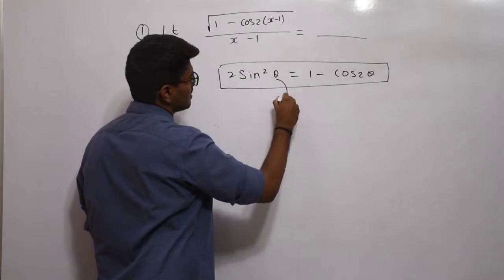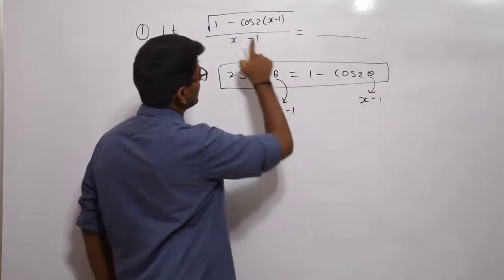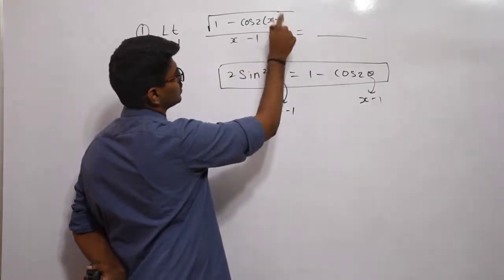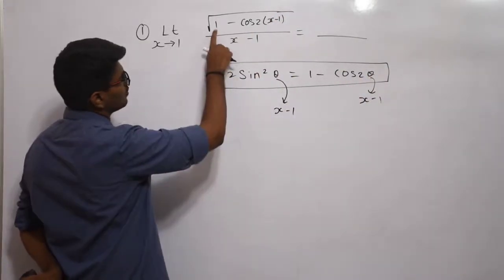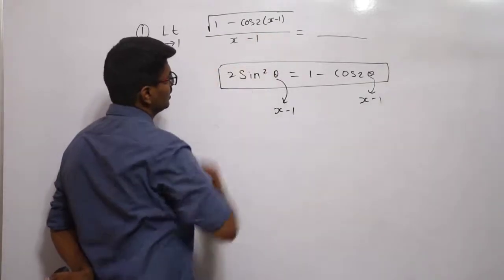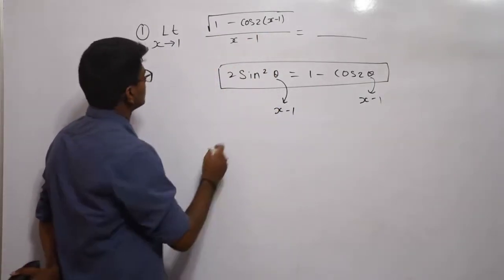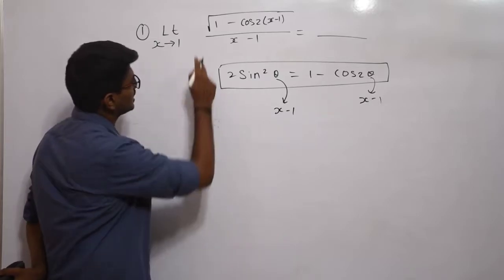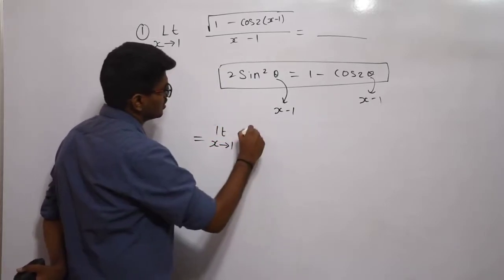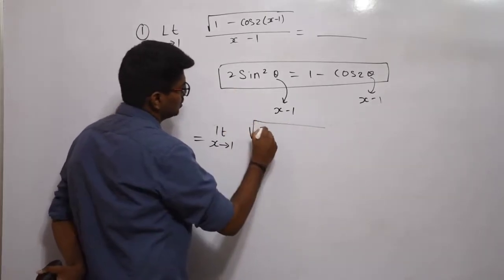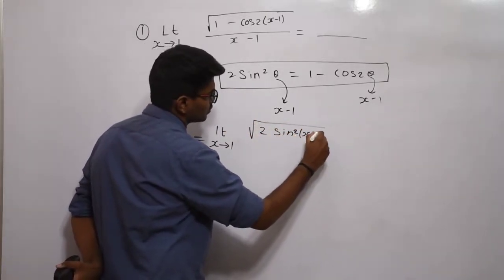Here theta is nothing but x minus 1. We have 1 minus cos 2(x minus 1), and x minus 1 is my theta. So instead of 1 minus cos 2(x minus 1), I can substitute 2 sin squared theta. This equation will be reduced further to root of 2 sin squared (x minus 1).